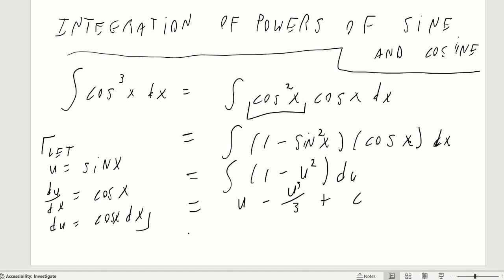So then we just substitute back in what u was assigned, u was assigned being equal to sine x, so this will be equal to the sine of x minus the sine of x cubed, all over 3, plus c. So that's an example of how to use trigonometric identity when integrating powers of cosine in this particular example.